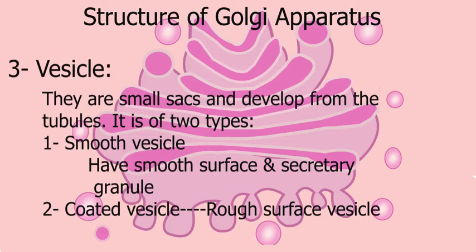Smooth vesicles have a smooth surface and contain secretory granules. Coated vesicles are rough surface vesicles covered by a hard coat.